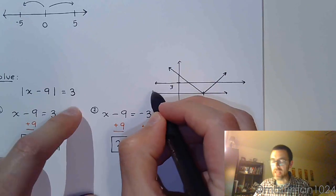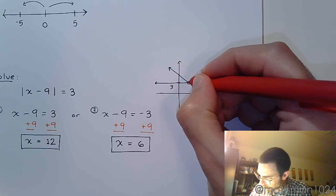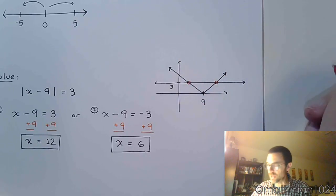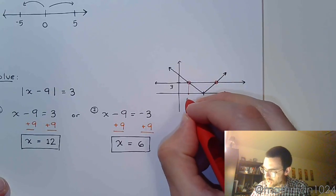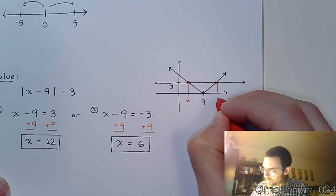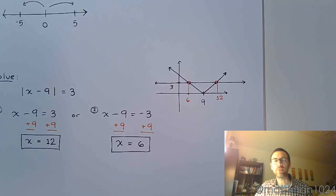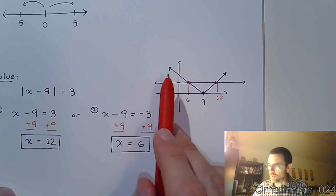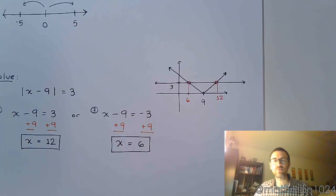And what we're looking at when we're trying to solve this absolute value equation is those intersection points. We see that we have two intersection points. One of these is going to be right here at 6, and the other one is going to happen at 12. Now clearly this graph is not to scale, but you get an idea about what's going on. So when can this absolute value equal 3? In two spots: 6 and 12.